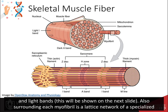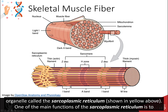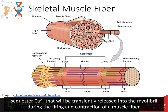Also surrounding each myofibril is a lattice network of a specialized organelle called the sarcoplasmic reticulum, shown in yellow above. One of the main functions of the sarcoplasmic reticulum is to sequester calcium that will be transiently released into the myofibril during the firing and contraction of the muscle fiber.